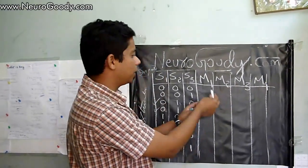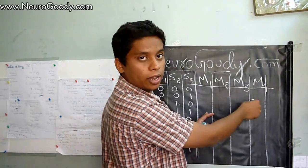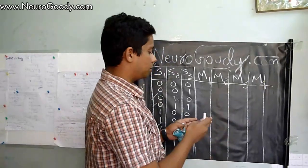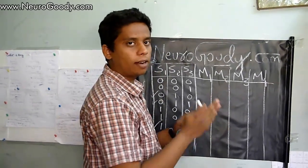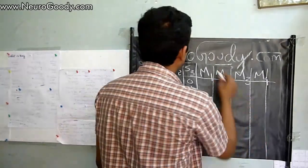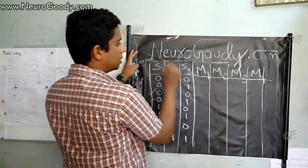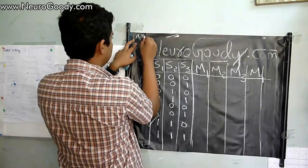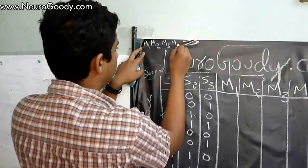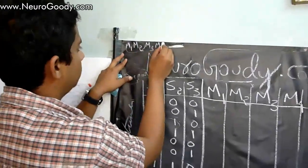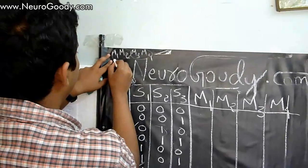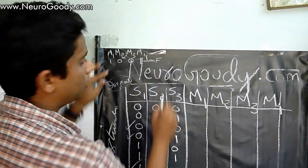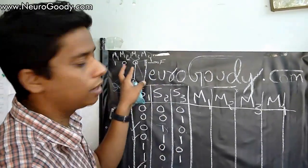We have to assign output binary functions for these variables. I will be assuming conditions for output variables for going straight, left, and right for the robot. So M1, M2, M3, M4 — M1 and M2 are one motor, M3 and M4 are the second motor. If I give something like 1001, I will take it as forward — in the hardware I will connect it so that if this value is given to the motors, the robot will go forward.